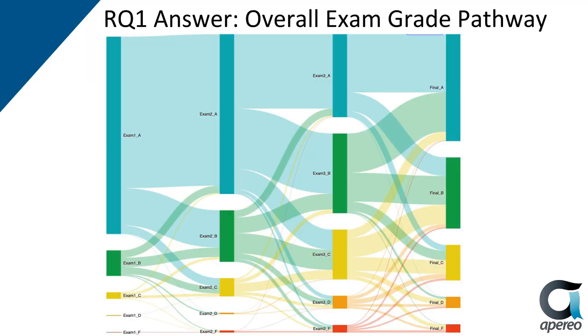Our fourth item is how do we integrate the learning record warehouse, which we have implemented here, into our enterprise data warehouse to connect registrar and admissions data to the activity of students as they take their courses? Xiao Jing is going to chime in on the visualization for that first question.